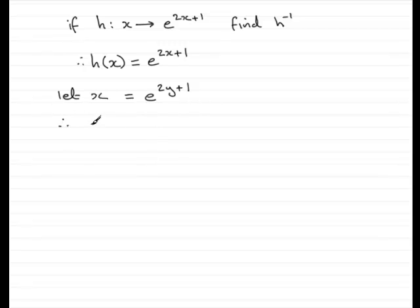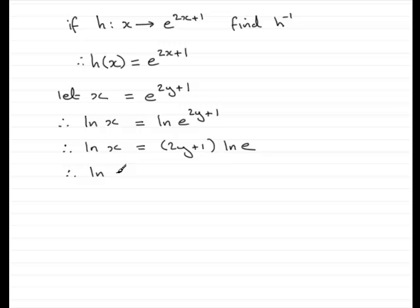And to do that, we take natural logs to both sides, so therefore the natural log of x equals the natural log of e to the 2y plus 1. And by the power rule for logs, we can bring the 2y plus 1 to the front of the log here. So we have the natural log of x equals 2y plus 1 multiplied by the natural log of e. Now, the natural log of e is 1, so we have that therefore natural log of x equals simply 2y plus 1.